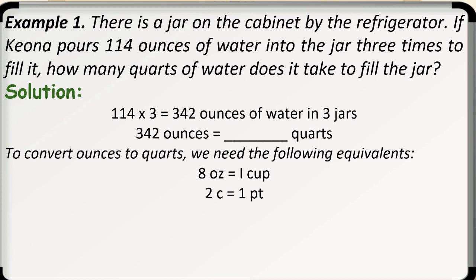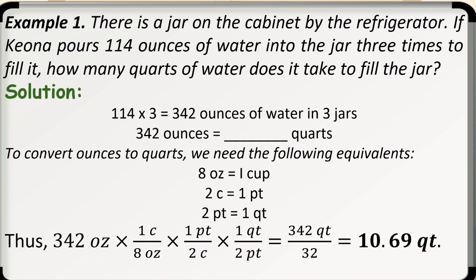Thus, our conversion factors will be 342 ounces times 1 cup over 8 ounces times 1 pint over 2 cups times 1 quart over 2 pints. Then, we need to cancel units for ounce, cup, and pint for us to derive at our target unit which is quarts.